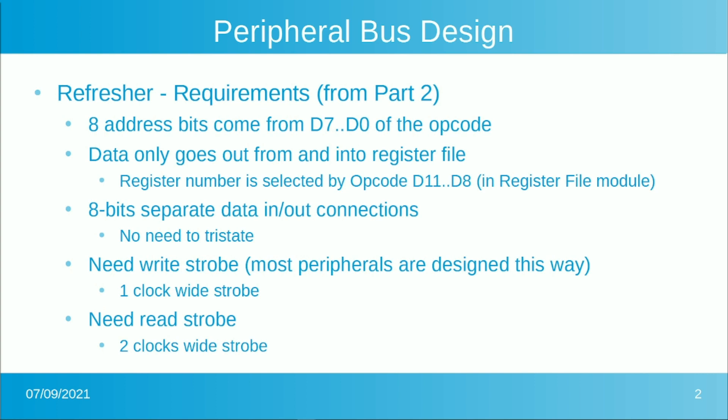There are eight bits of separate data in and out connections, so there's no need for tristate. If you hooked up to a traditional peripheral, to save pins they would have shared input and output on one pin with a direction control pin. But with this design, that's not necessary. We have separate data in and out buses — eight-bit connections out to the devices or in from the devices — which is pretty convenient and makes things a lot easier to use externally, meaning externally to the CPU.